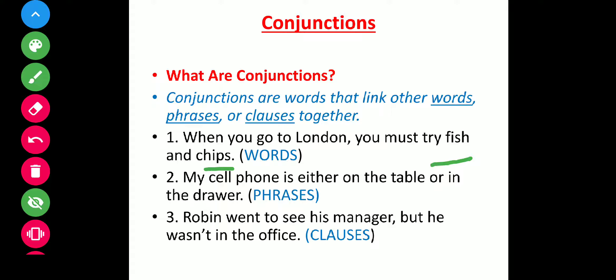Another example: 'My cell phone is either on the table or in the drawer.' Here, the conjunction joins the phrase 'on the table' to the other phrase 'in the drawer.'